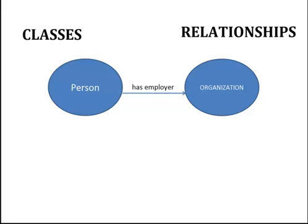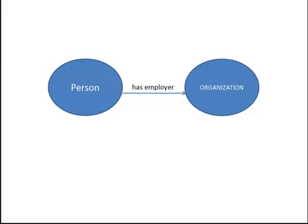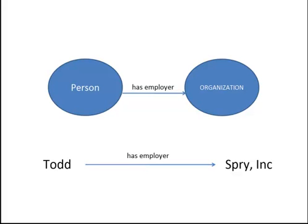We can use ontologies to begin describing real-life relationships. For example, Todd is an instance of the class Person, and Spry Inc. is an instance of the class Organization. Ontologies capture the relationships between these two instances. In this example, Todd has employer Spry Inc.